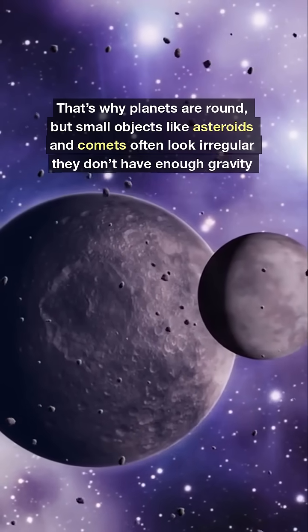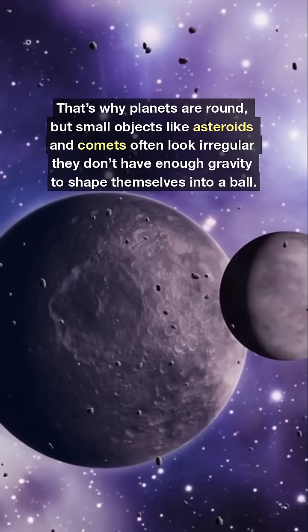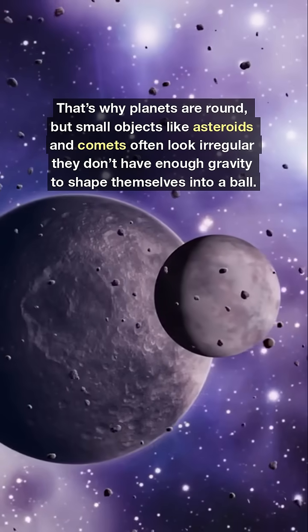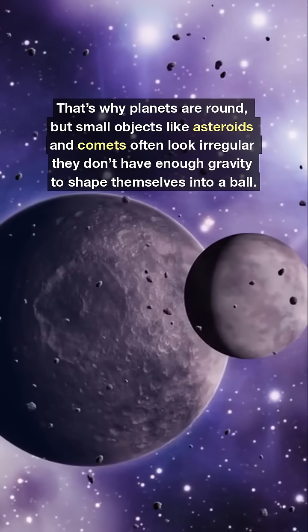But small objects like asteroids and comets often look irregular. They don't have enough gravity to shape themselves into a ball.